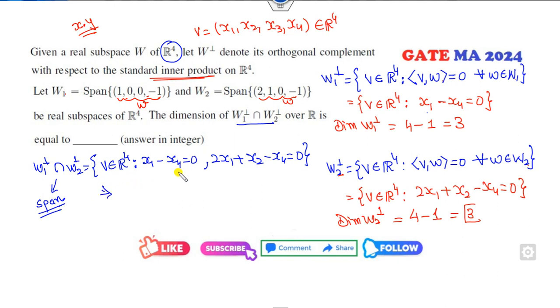So I can write this equation into the system AX = B. The right-hand side is zero. So [1 0 0 -1], and this value will be [2 1 0 -1]. Now since it is zero, how can you find the dimension of W1⊥ intersection W2⊥? That means nullity. By the rank-nullity theorem, the number of column vectors is 4, so 4 minus rank of A.